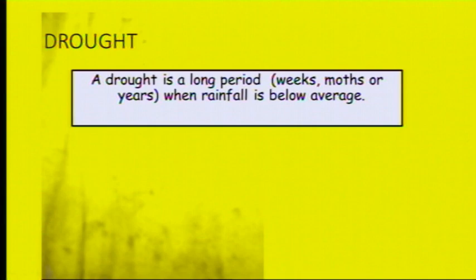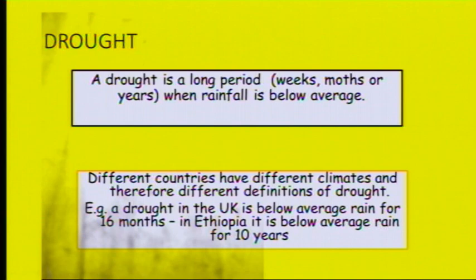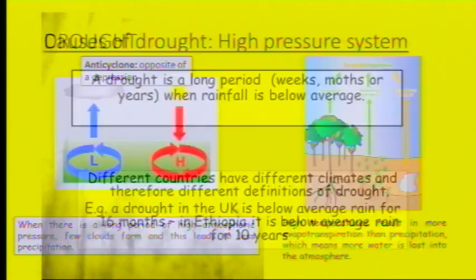Drought is a long period — so weeks, months, or years — when rainfall is going to be below average. Depending on where you live, below average is going to vary. The longest drought in the UK was when we had below average rainfall for 16 months, whereas in Ethiopia the below average rainfall has been lasting for 10 years.